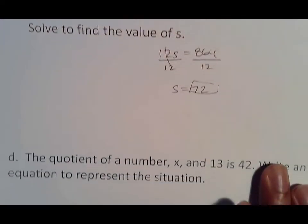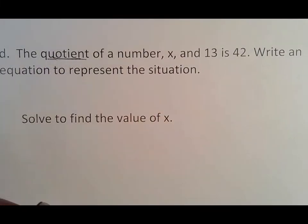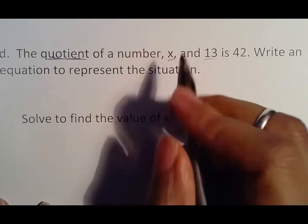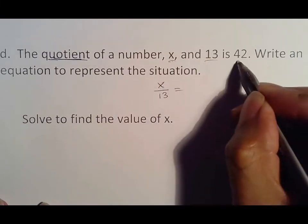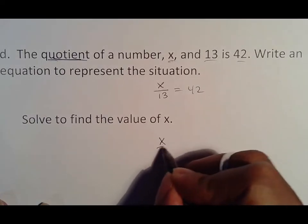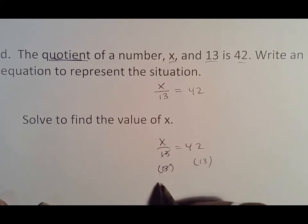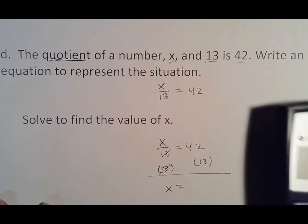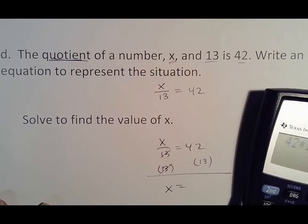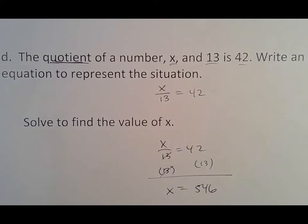The quotient of a number x and 13 is 42. Write an equation. Quotient means divide, x and 13. The order on this is that whatever's stated first in division goes first and whatever is second goes on the bottom. First and second, this way, is 42. When we solve this, x over 13 equals 42. How do we get rid of 13? We multiply by 13 on both sides. Those two things cancel out, x comes down. 42 times 13 is 546.